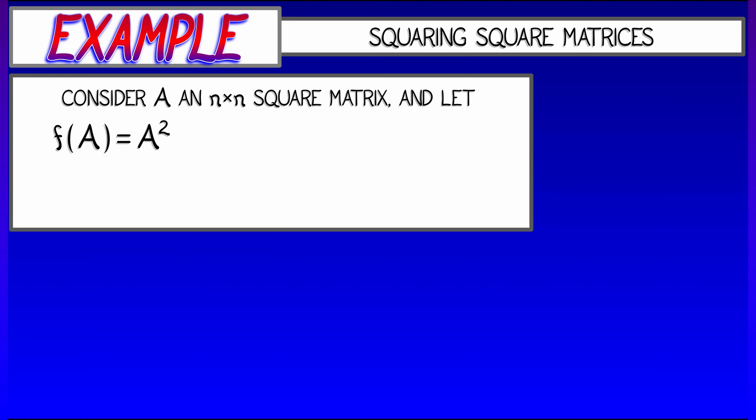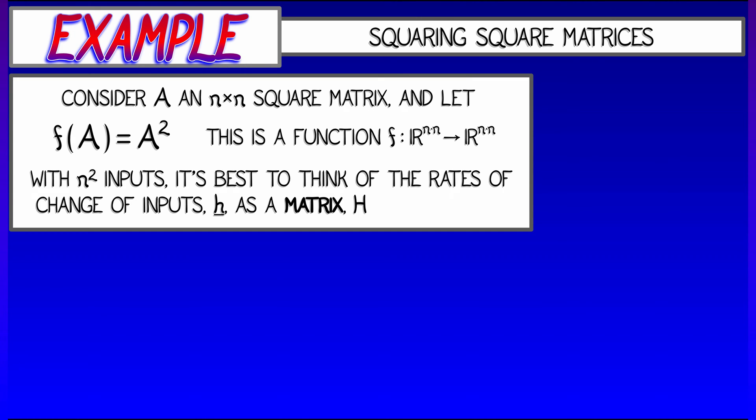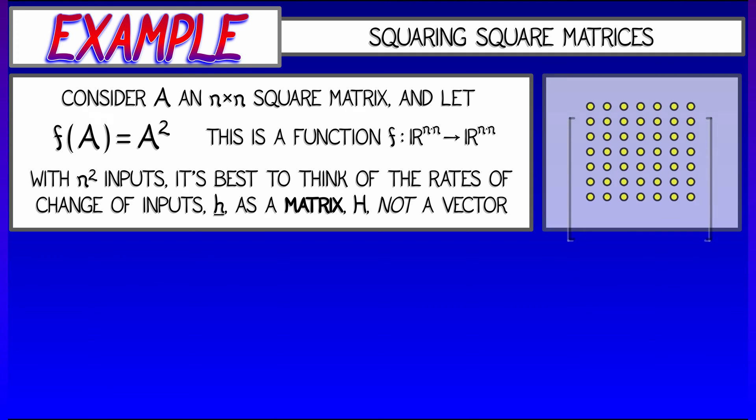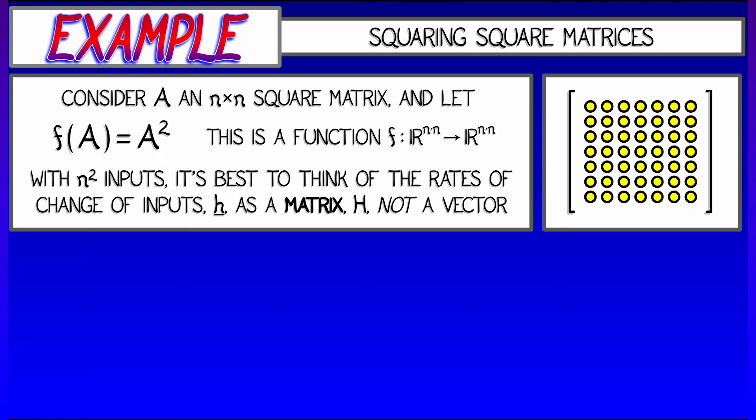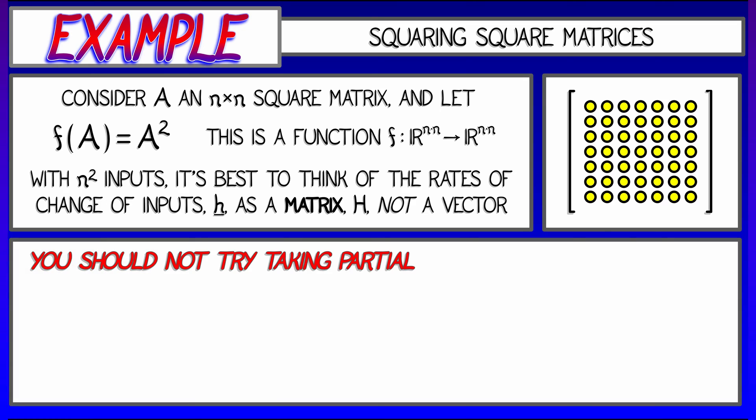Now, we can think about this as a function with n squared inputs and n squared outputs, but I'd rather not think about the inputs and outputs as vectors. Rather, they are matrices, and that means that I'm also going to think about the rates of change of the inputs, H, as a matrix and not as a vector. I'm going to denote that matrix by capital H instead of lowercase h with an underline. And now I want you to think about that matrix H.